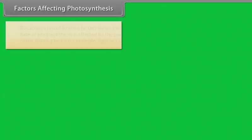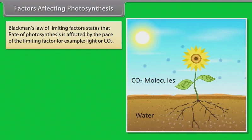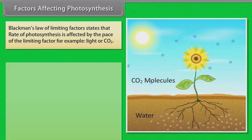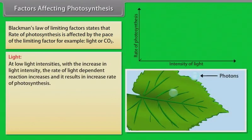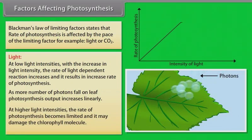Blackman's law of limiting factors states that the rate of photosynthesis is affected by the pace of the limiting factor, such as light or CO2. At low light intensities, as light intensity increases, the rate of the light-dependent reaction increases, resulting in an increased rate of photosynthesis. As more photons fall on the leaf, photosynthesis output increases linearly. At higher light intensities, the rate of photosynthesis becomes limited and excess light may damage the chlorophyll molecule.